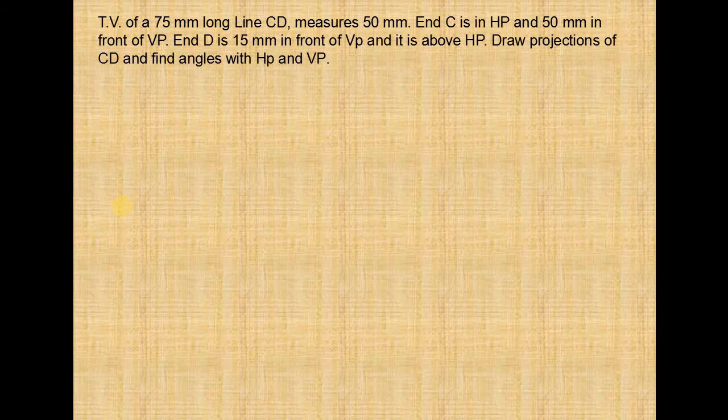Top view of a 75mm long line CD measures 50mm. End C is in HP and 50mm in front of VP. End D is 15mm in front of VP and it is above HP. Draw projections of CD and find angles with HP and VP.